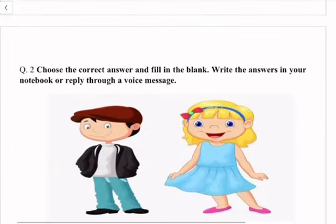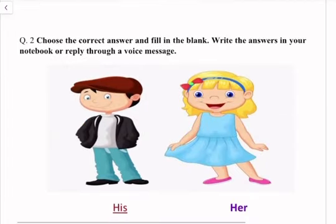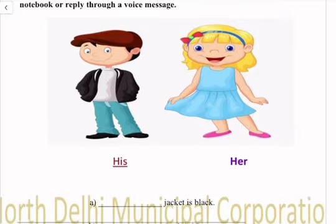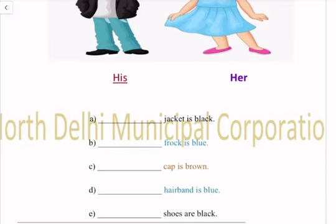Question number 2: Choose the correct answer and fill in the blanks. Write the answer in your notebook. First is: jacket is blue — His jacket is blue.